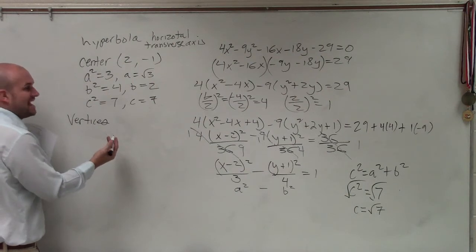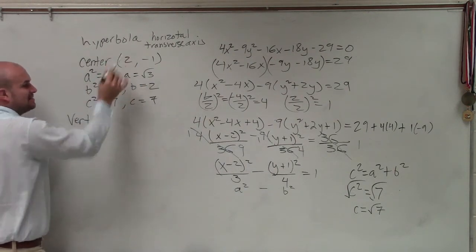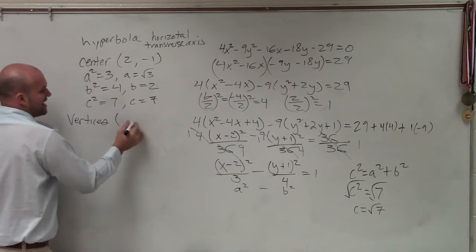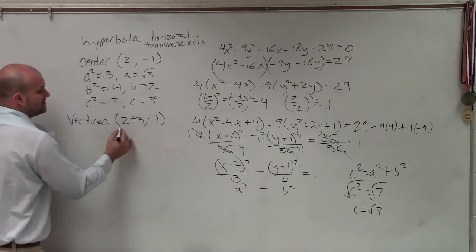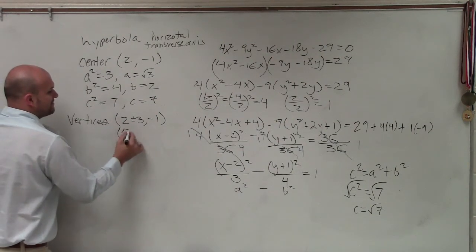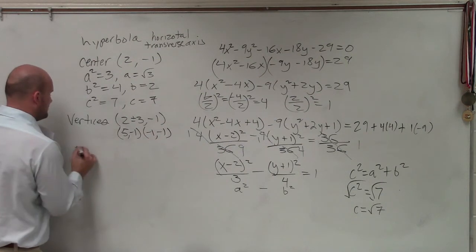We know the center is 2 comma negative 1. The vertices are at the center, but they're just the a distance away. But remember, since we're going left to right, I'm going to add and subtract them to my center, or my x-coordinates. So it's going to be 2 plus or minus 3 comma negative 1. Please simplify this if you can. So 2 plus 3 is going to be 5 negative 1, or negative 1 negative 1.